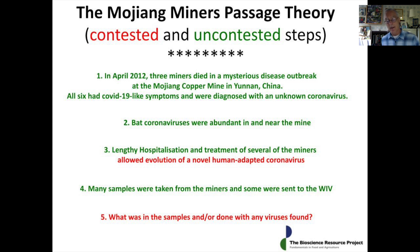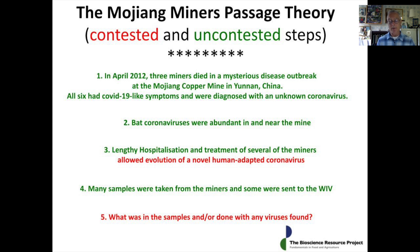Any research done with these viruses would have included sequencing them, culturing them, and cloning them. Our proposal — the Mojiang Miner Passage proposal — is that the viruses being manipulated in the lab through this culturing and sequencing eventually jumped out and caused the pandemic. This doesn't preclude the idea that they may subsequently have been engineered, but engineering is not a necessary part of the theory.